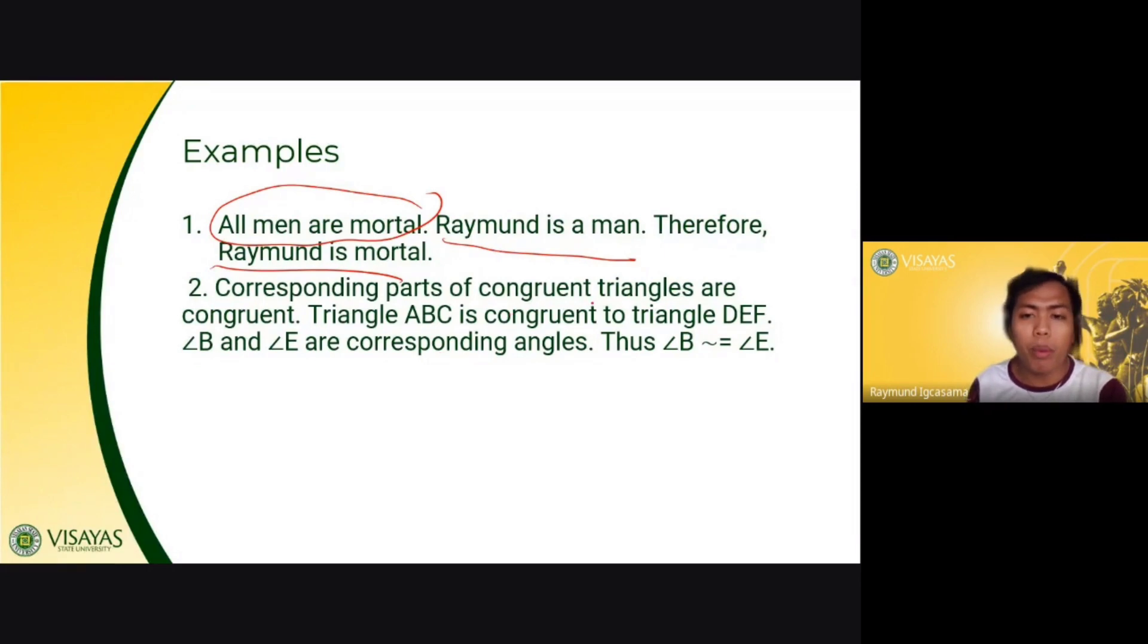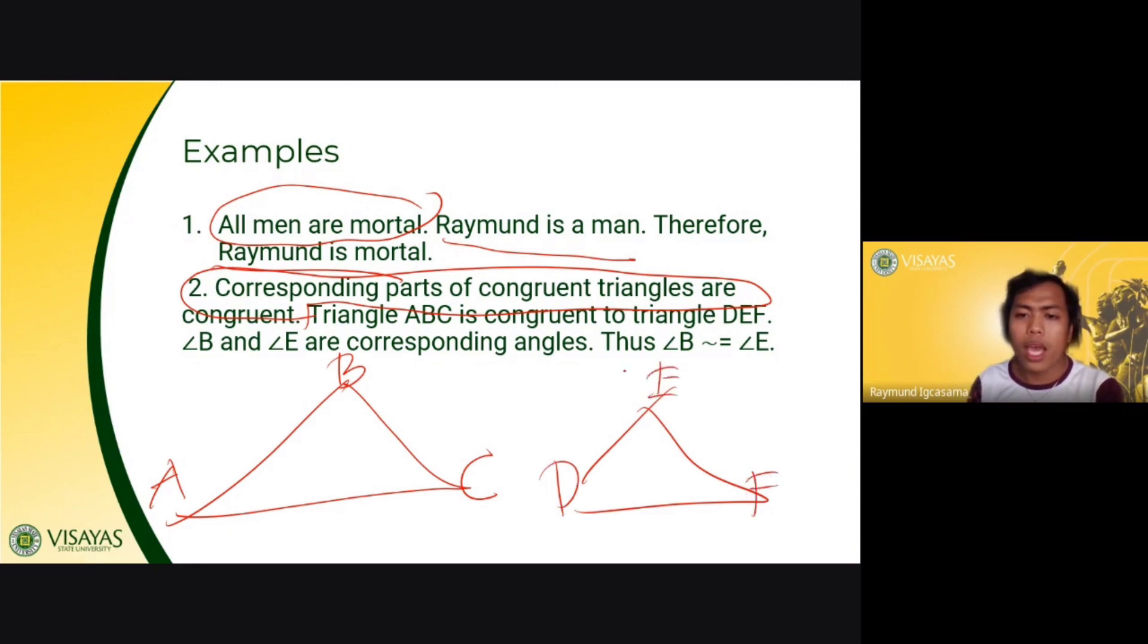Number two, corresponding parts of congruent triangles are congruent. So this is a theorem or a property of congruent triangles. So you make two examples, two scenarios given triangle ABC and triangle DEF. They are congruent. Triangle ABC and triangle DEF are congruent. Therefore, angle B and angle E are corresponding angles. So you can conclude that angle B is congruent to your angle E. Why? Because of the rule that says corresponding parts of congruent triangles are congruent.